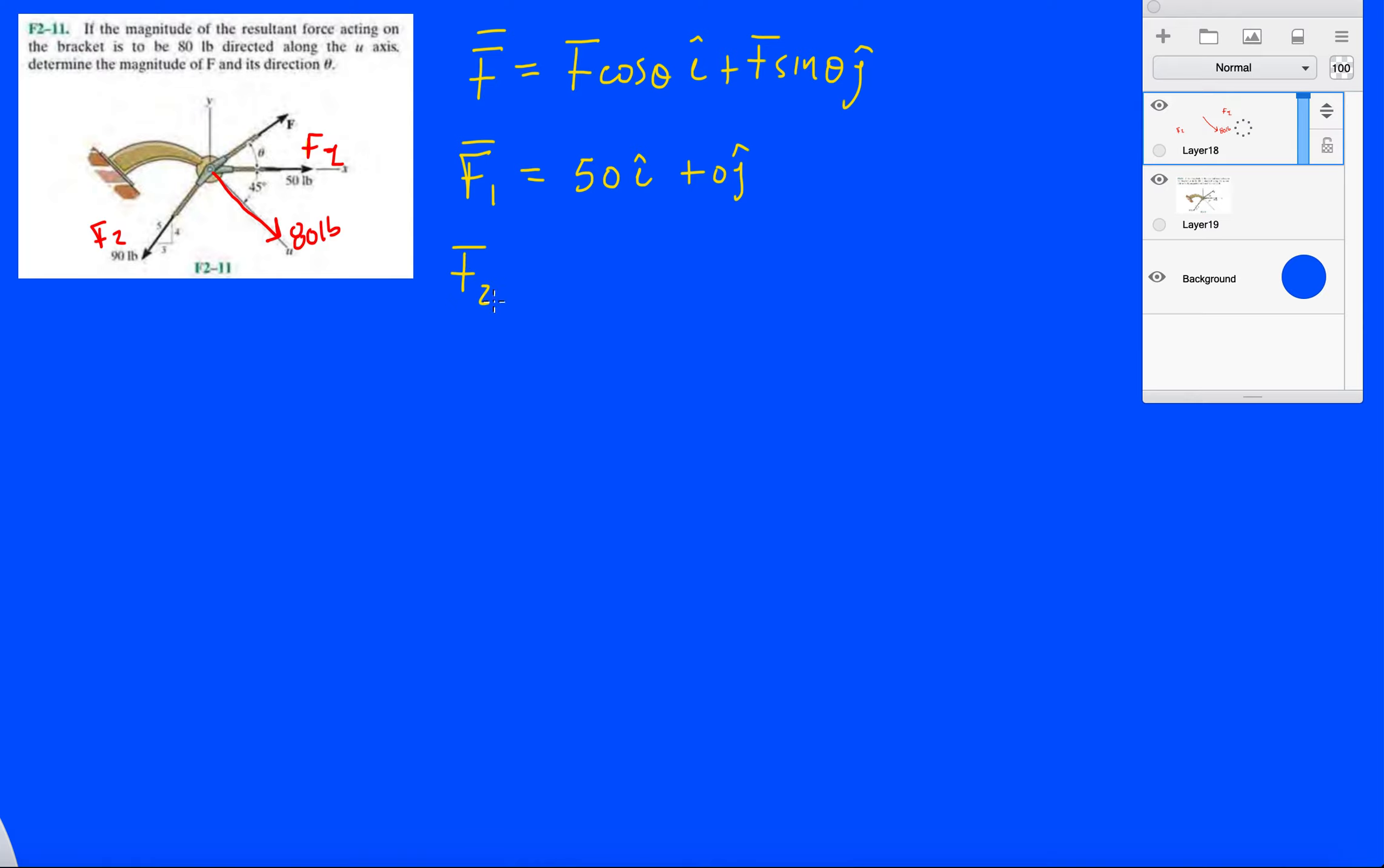Okay, let's do F2. Now F2 is pointing to the left and down, so it's going to be negative, negative. So let's do minus 90. So again, because we have that 3, 4, 5 triangle, so let's take the magnitude minus 90.